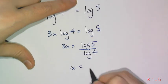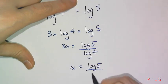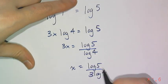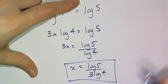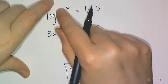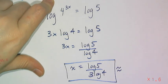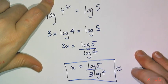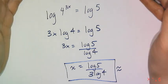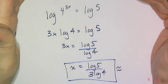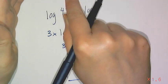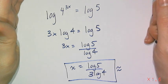And I get x equals log 5 over 3 log 4. And this is the exact value of x in this equation. And of course, from here, you can find some decimal approximation with your calculator. But this is how we solve equations where x is in the exponent.